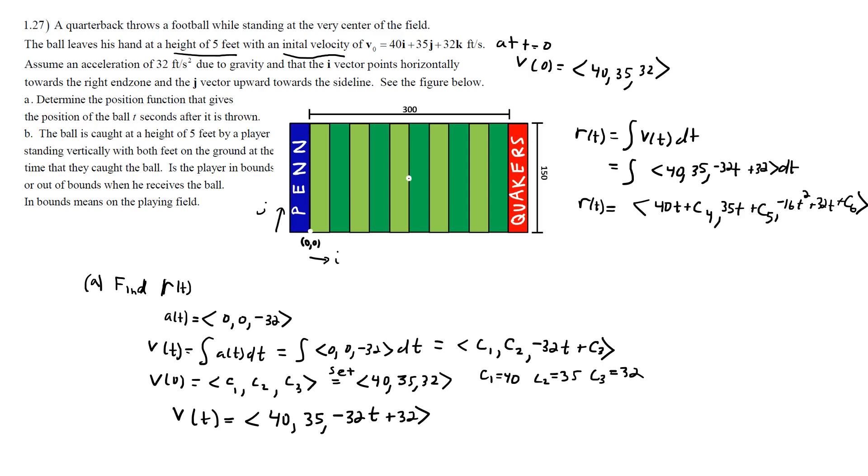But we know the initial position. When T is 0, we have that the player is at the center of the field. And so with the origin placed where it is, the I component will be halfway, so that's 150. The J component will be halfway, so that's 75. And then how high off the ground is the 5 feet off the ground when he launched it.